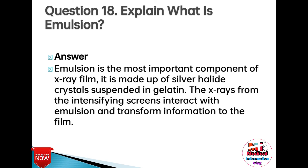Question 18: Explain what emulsion is. Answer: Emulsion is the most important component of X-ray film. It is made up of silver halide crystals suspended in gelatin. The X-rays from the intensifying screens interact with the emulsion and transform information to the film.